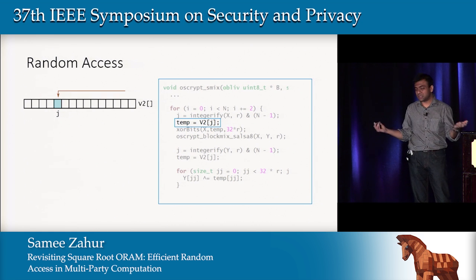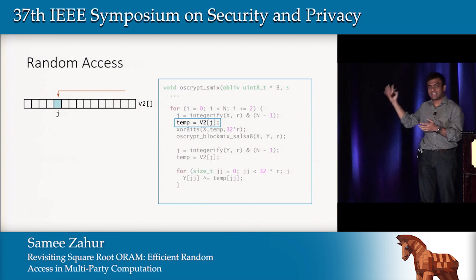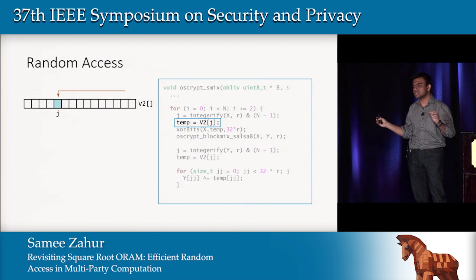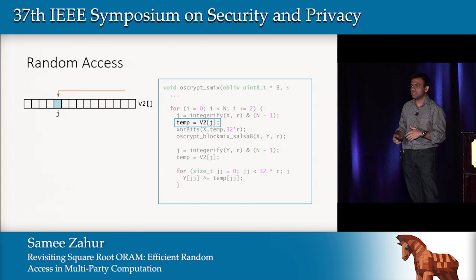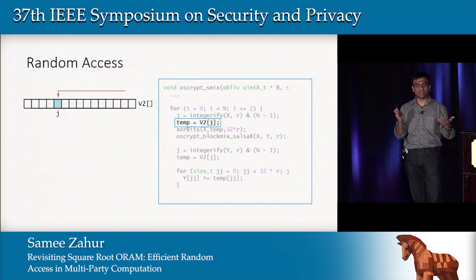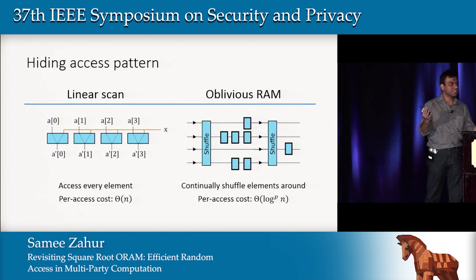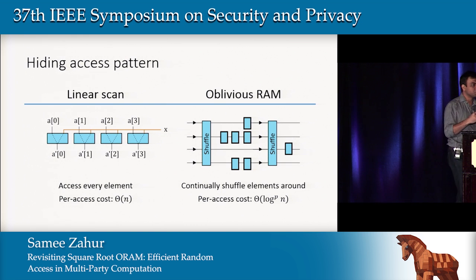You could in theory hide everything by accessing every single element to hide which one you're really interested in, but in that case you've just made one array access a linear-time operation — a linear scan that will make most non-trivial algorithms completely unscalable.